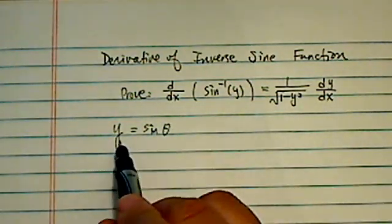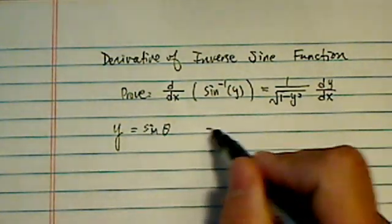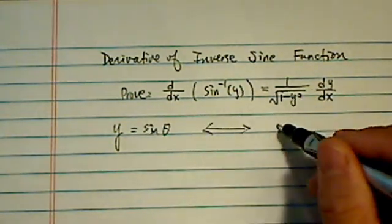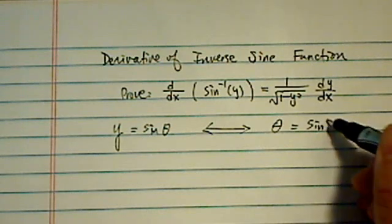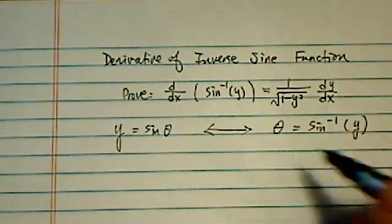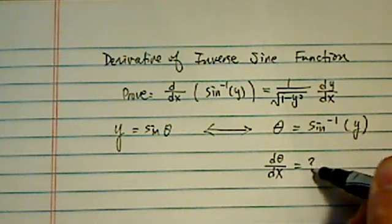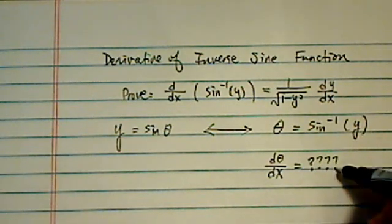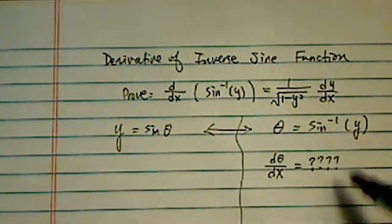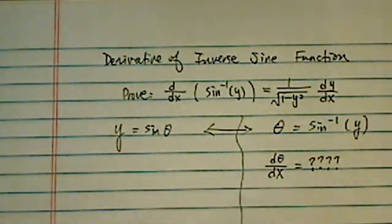When I gave us y is equal to sine theta, it's equivalent to say this angle is equal to sine inverse of y. So basically, we're looking for d theta dx is equal to what? So the majority of the action does not happen on this side. It actually happens on that side.